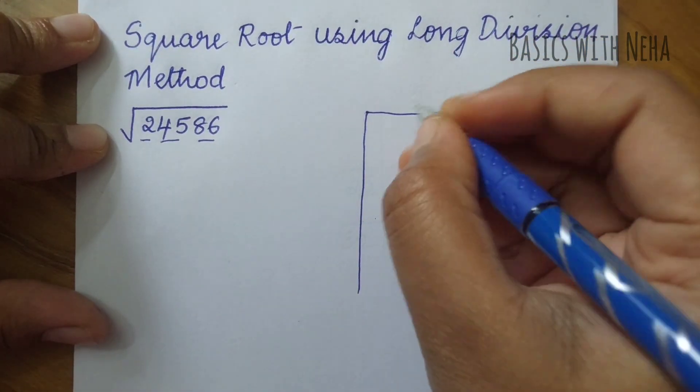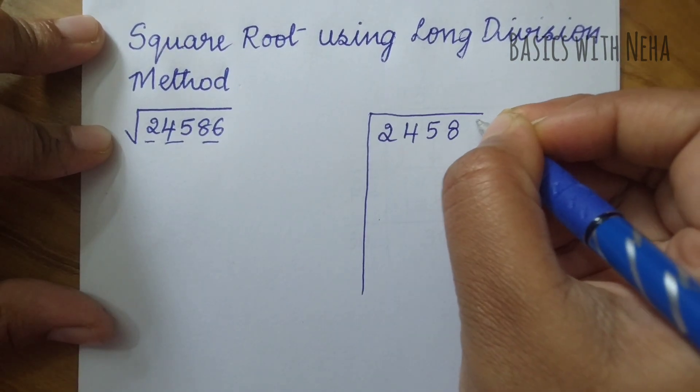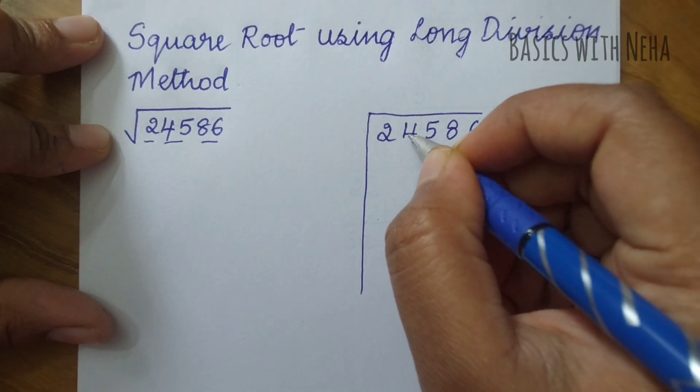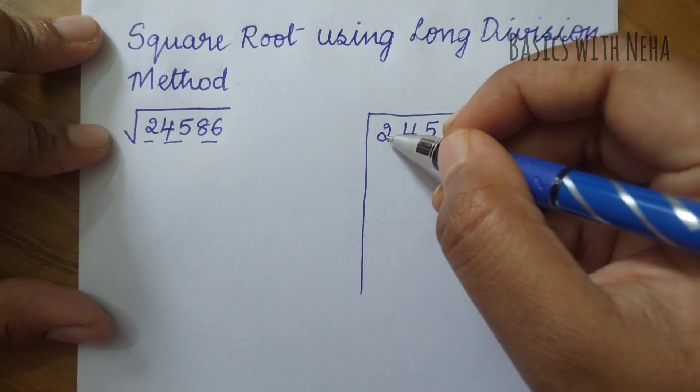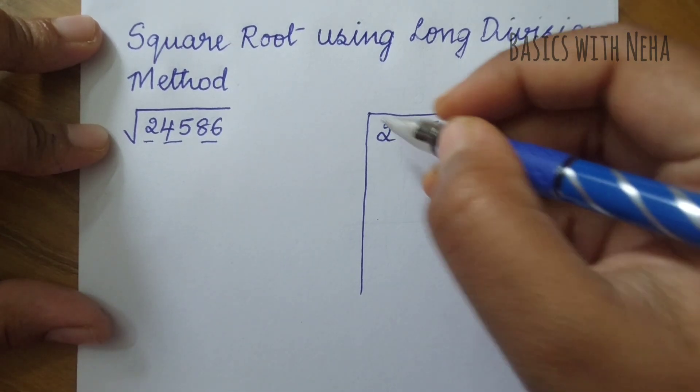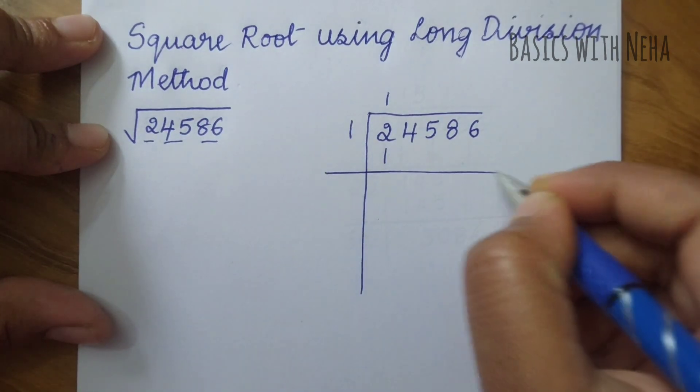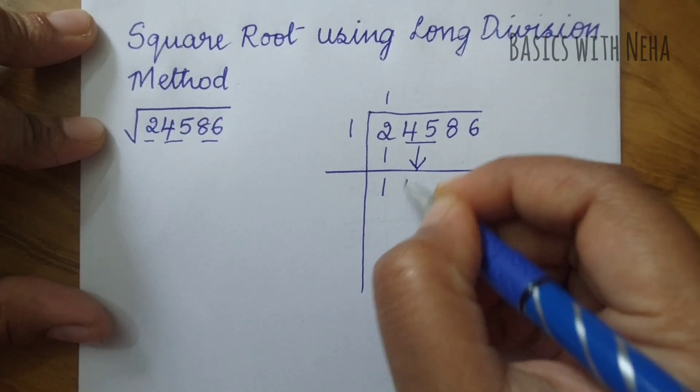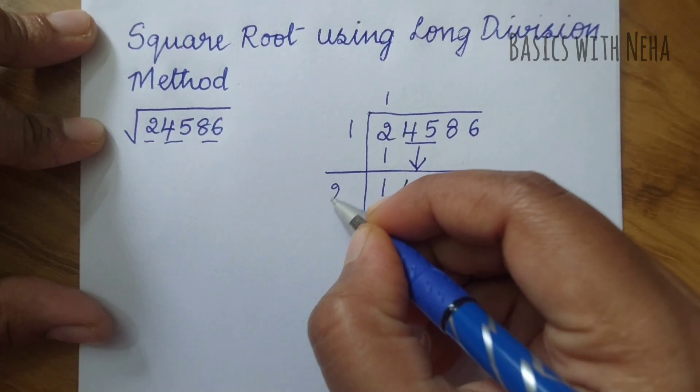First write the number 24586. Since we have grouped 86 into one, 45 into one, and 2 separately, we have to find the number which when squared is near to 2 or less than 2. It's obviously 1. 1 times 1 is 1. When I subtract that it will be 1.